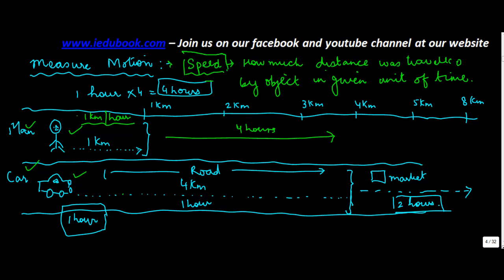So speed is basically the distance. How much was the distance? One kilometer was traveled by the object in given unit of time. One kilometer per hour. In one hour it travels one kilometer. So speed is used to measure motion.